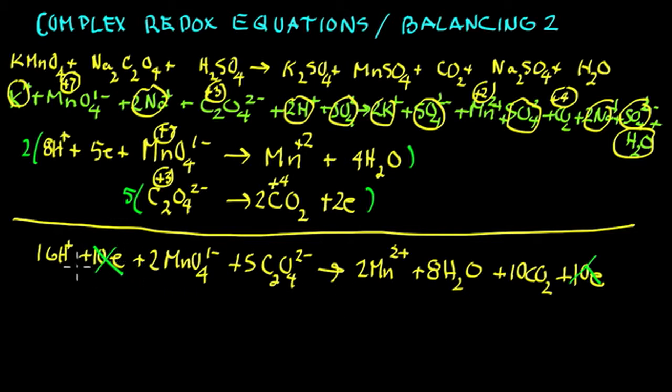All we do is take our coefficients and put them back in the equation. 16 hydrogen ions. Well, up here we have 2, so 8 times 2 is 16. 2 permanganate. Okay, put a 2 in front of there. 5 oxalate, Na₂, put a 5 there. On the right side, 2 manganese. Looking up here, 8 water.